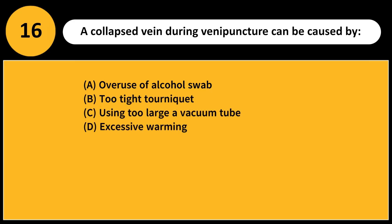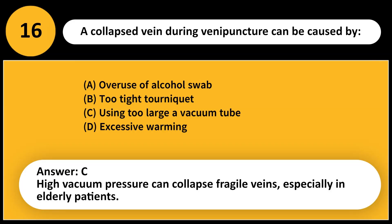A collapsed vein during venipuncture can be caused by: A. Overuse of alcohol swab. B. Too tight tourniquet. C. Using too large a vacuum tube. D. Excessive warming. Answer: C. High vacuum pressure can collapse fragile veins, especially in elderly patients.